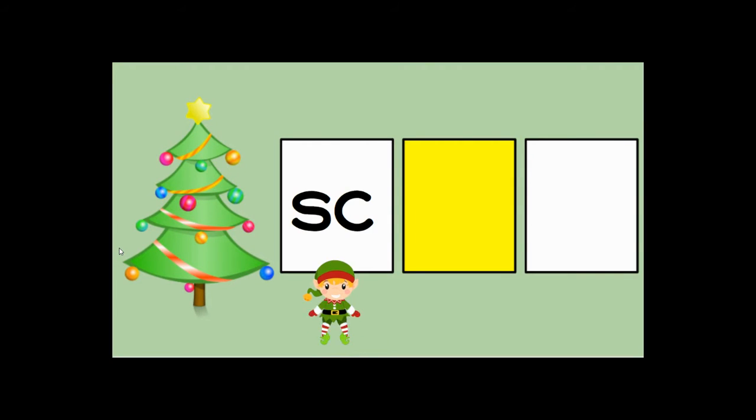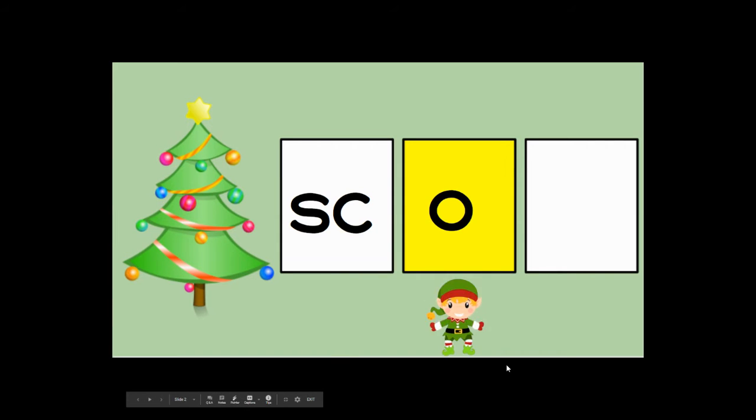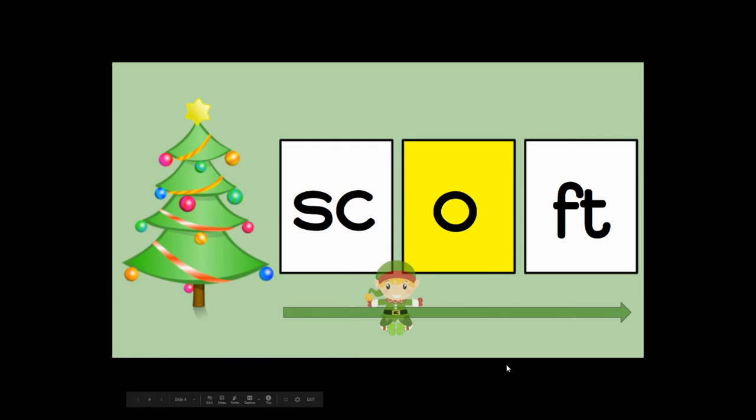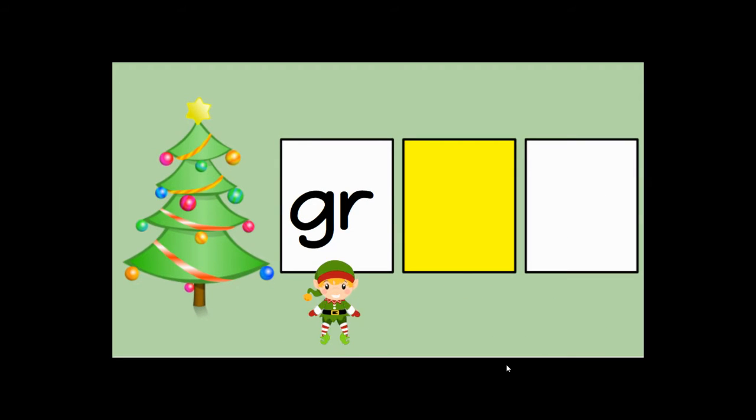Let's practice putting those sounds together on the blending board. Here we go. You say the sounds with me and then we'll blend the words together: sk aft stopped per.